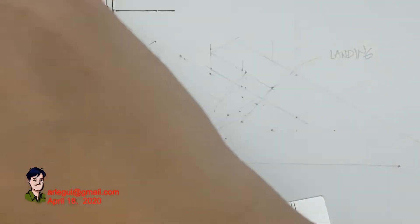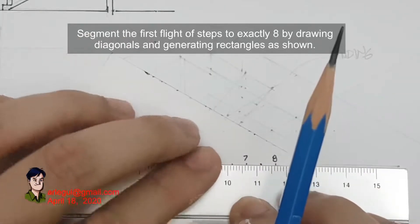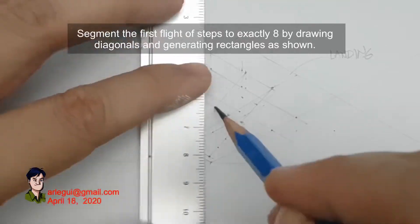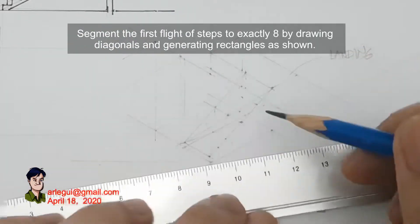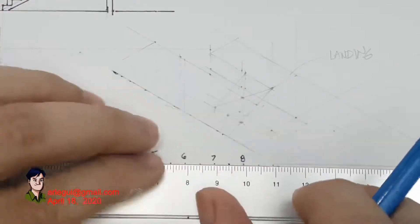Right now I'm drafting this. I created the volume first and now I'm trying to segment exactly the first nine steps.